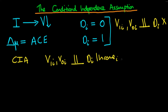and in theory we should include all the other variables which might differ between the two groups. Then conditional on those variables, it might be the case that the potential level of violence within that state had they or had they not received infrastructure spending might actually be independent of the treatment status.